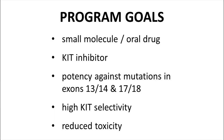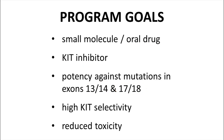We have now described the drug program at Merck KGAA. The discovery team aimed to design a small molecule, orally available compound. The compound must inhibit KIT with potency against the specific gene mutations in exons 13, 14, 17, and 18 that give rise to imatinib resistance. Furthermore, the compound should be highly selective for KIT, with minimal potency against other tyrosine kinases to ensure reduced toxicity. Let's now dive into the research program.